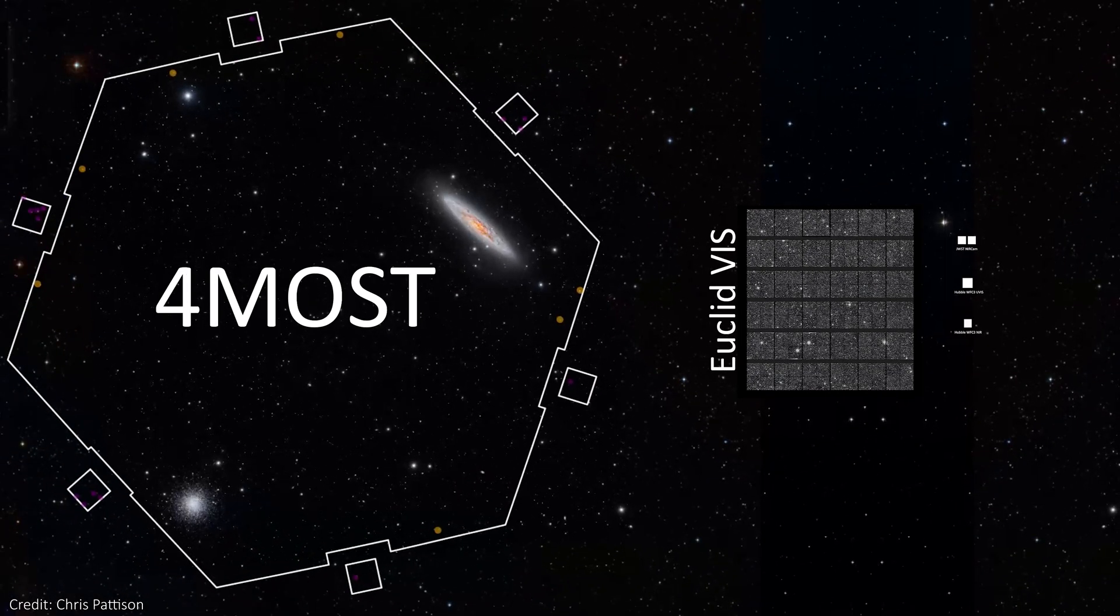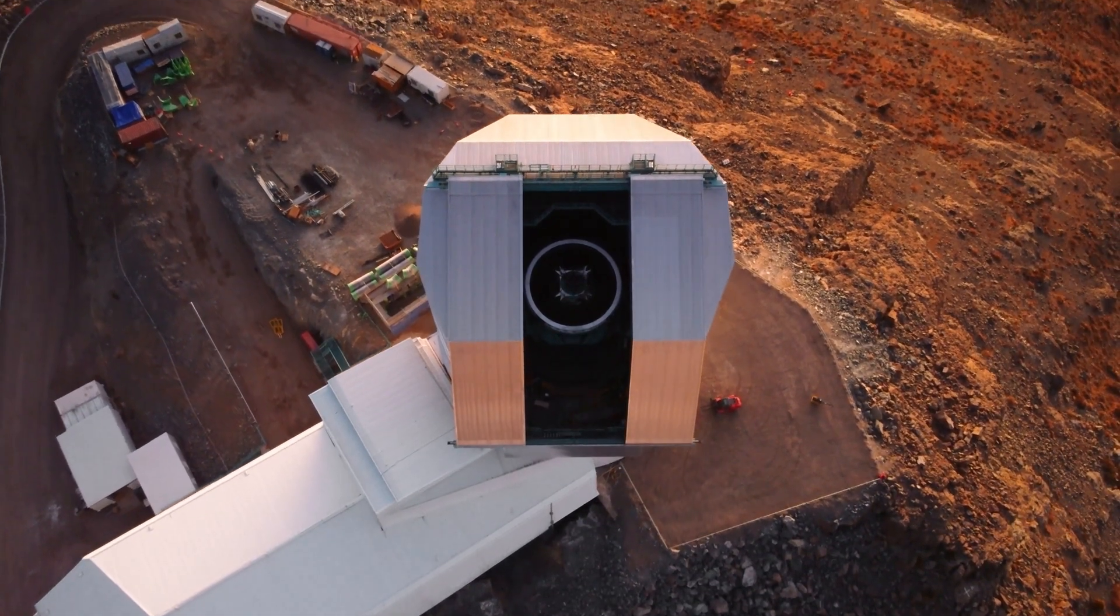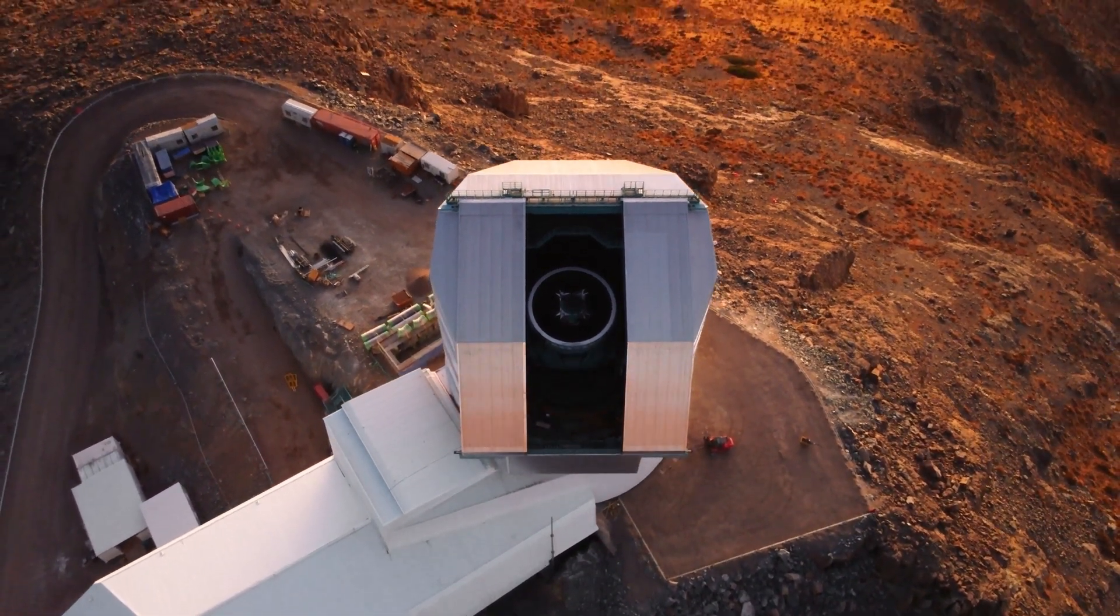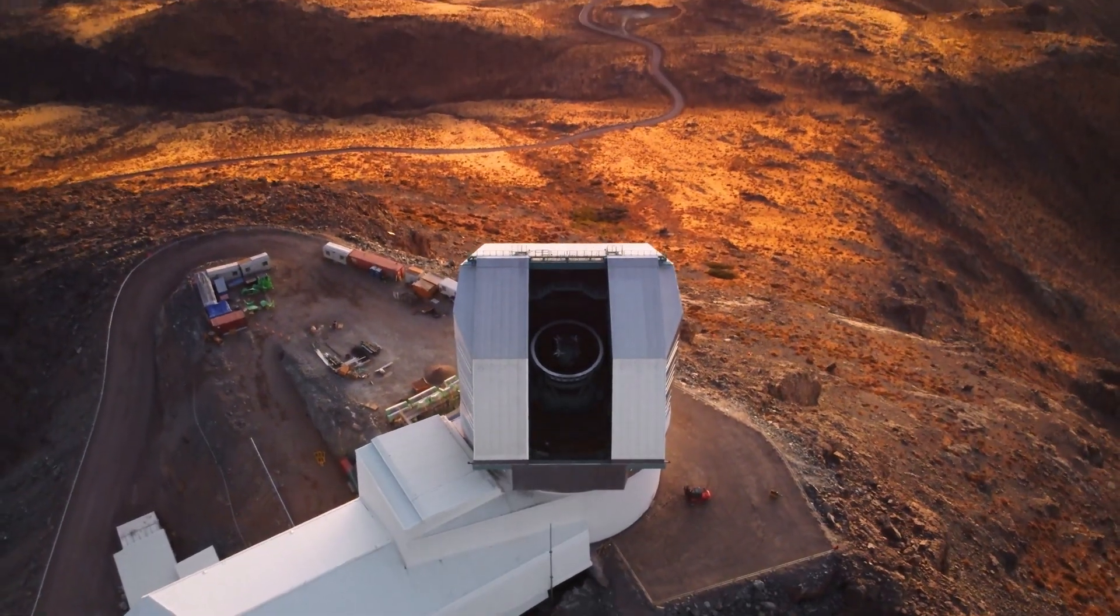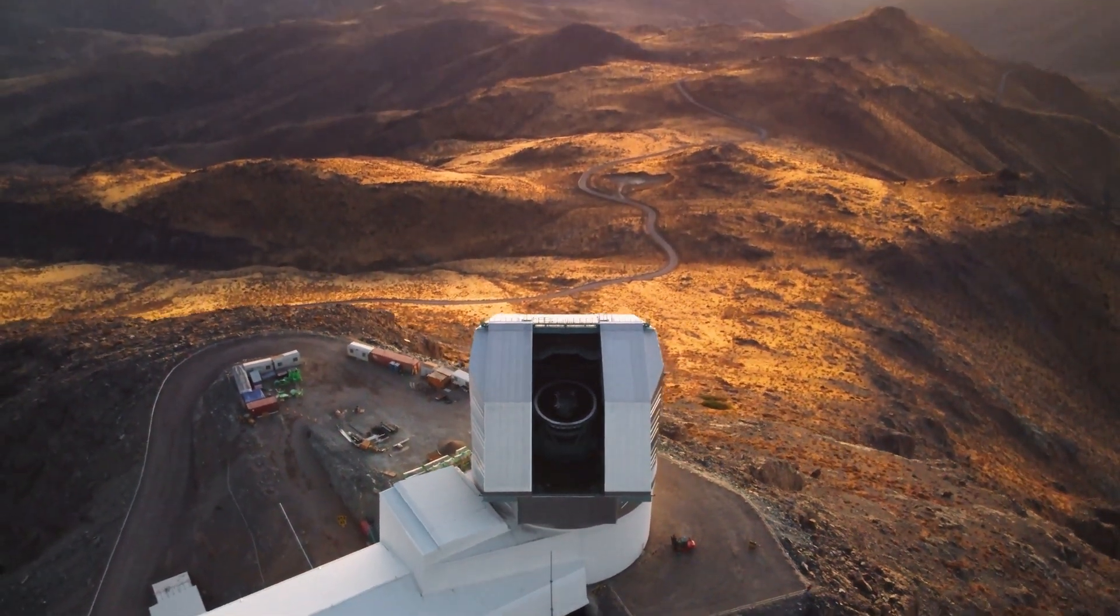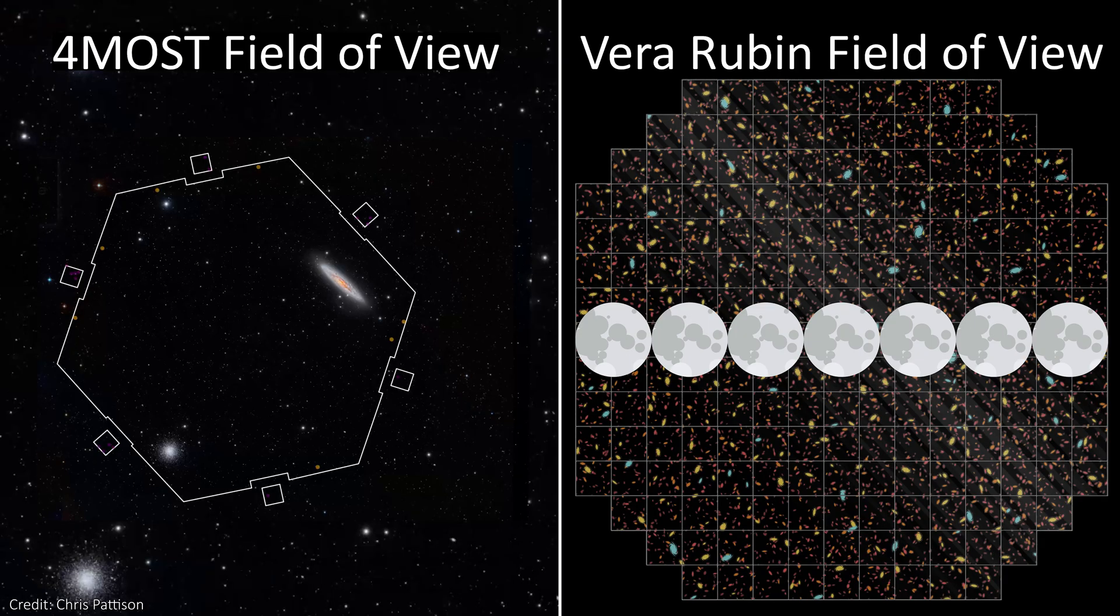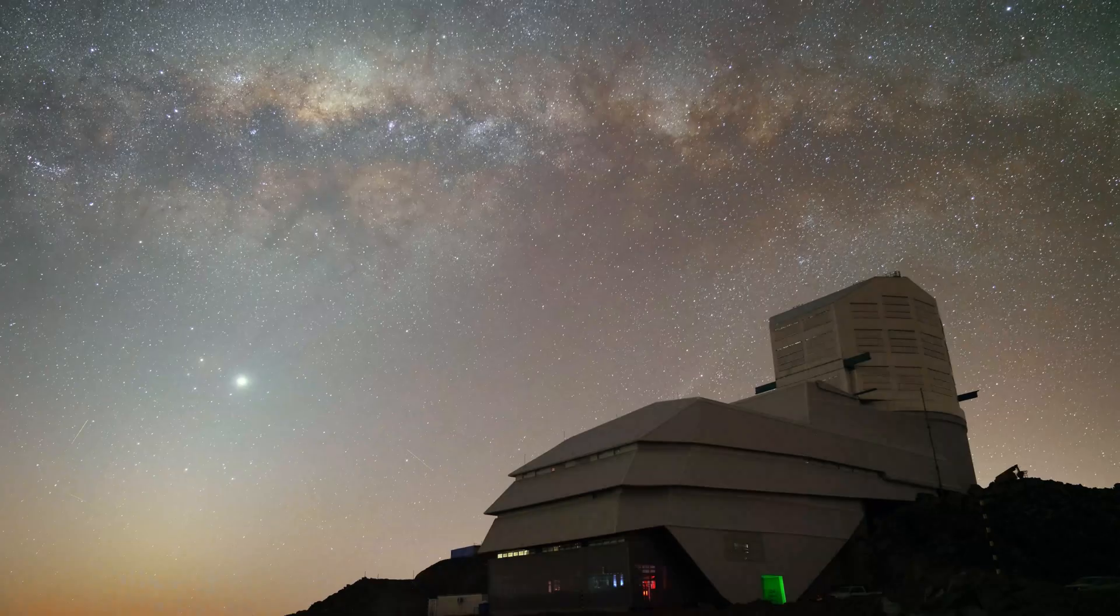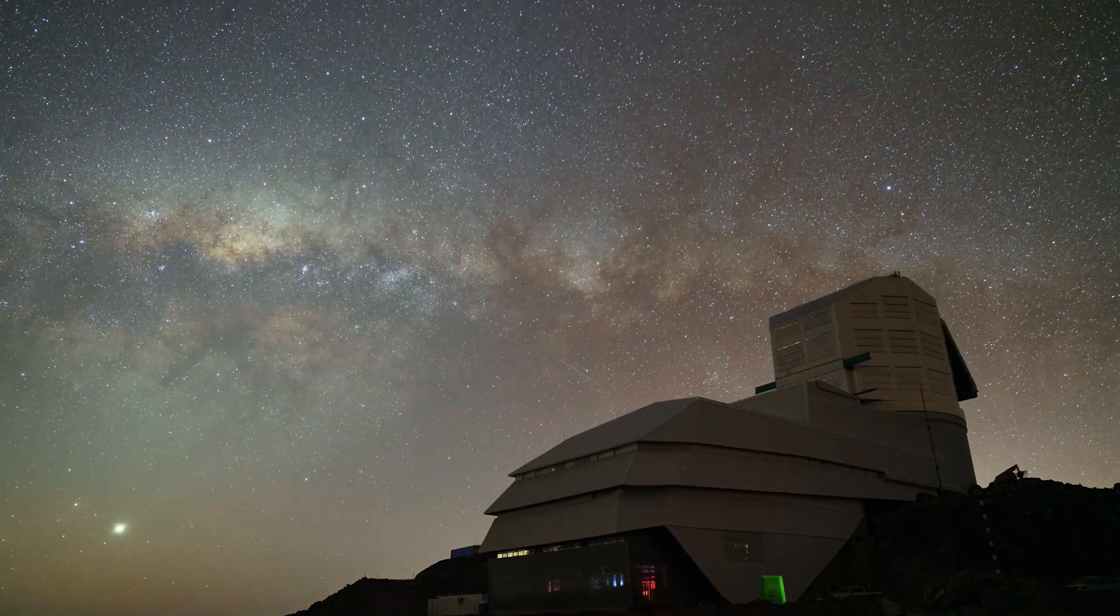On Earth though, the Vera Rubin Observatory, which is another telescope in Chile, does beat Foremost with a huge field of view of 9.6 square degrees. But this is only an imaging telescope, it doesn't do spectra, so they're quite different. In fact, a large part of Foremost's mission will be to do spectroscopic follow-up of objects observed in Vera Rubin images.